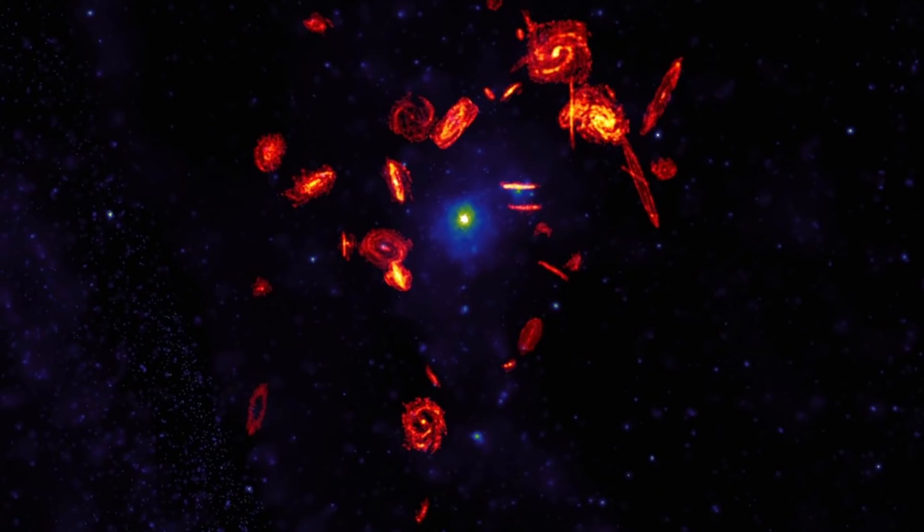We're discussing this because of a recent study that was able to analyze it using some of the new techniques and also producing some of the images that we've never really seen before. This is what this cluster looks like with a new survey known as VERTICO, which stands for Virgo Environment Traced in Carbon Monoxide.